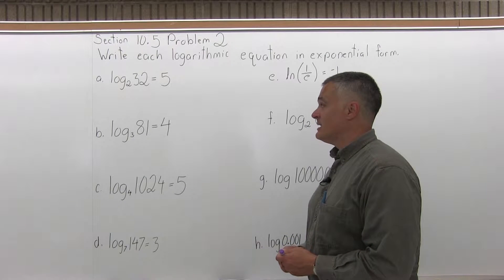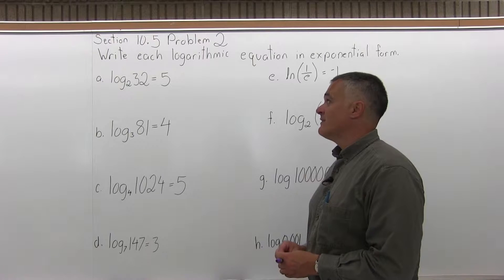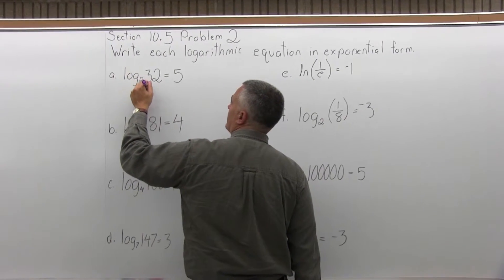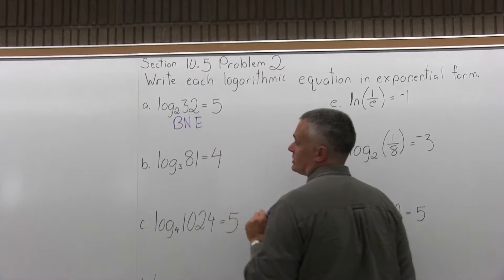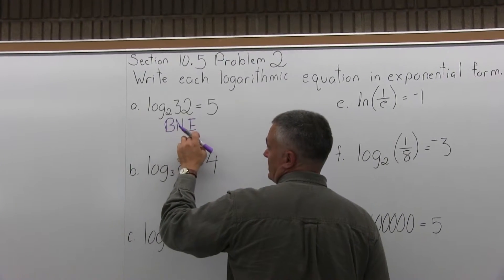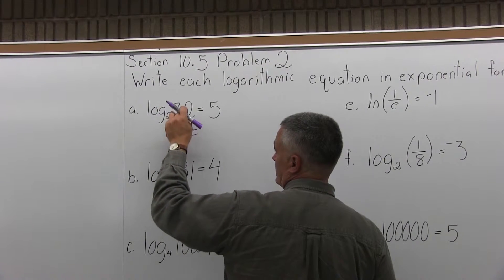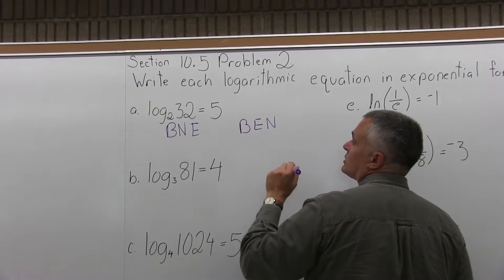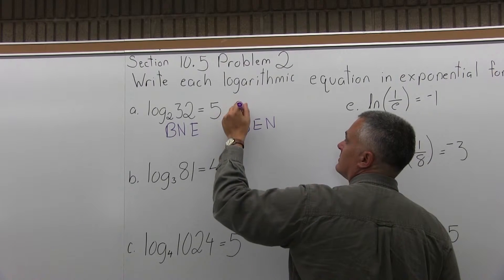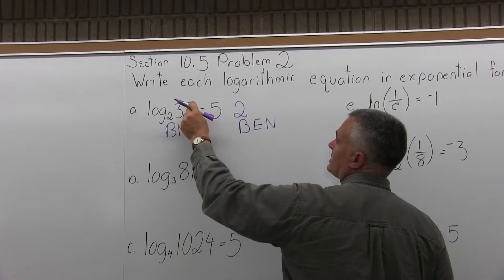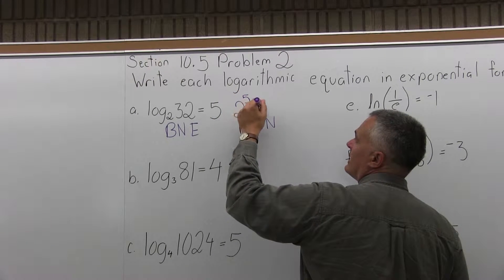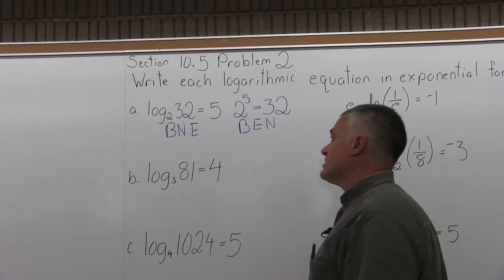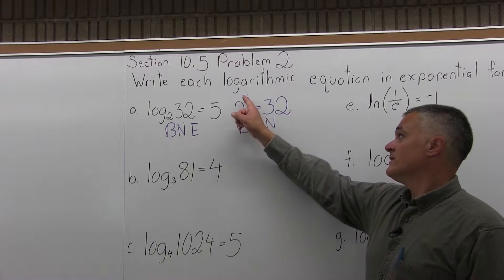Part A says write log base 2 of 32 equals 5 in exponential form. I use the name Benny — B for base, N for number, E for exponent — written underneath the log version. In this problem, the base is 2, the number is 32, and the exponent is 5. To write the exponential form, I write BEN: base first (2), then the exponent (5), then equals, then the number (32). So log base 2 of 32 equals 5 is the same as writing 2 to the fifth power equals 32.